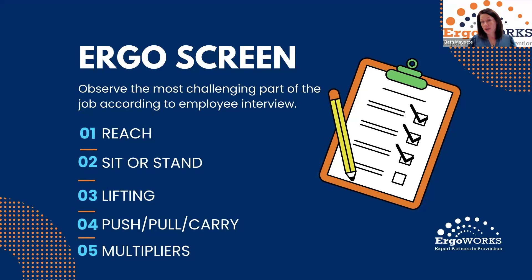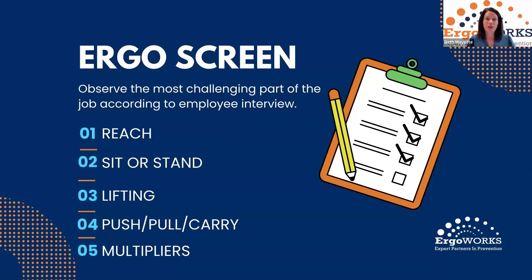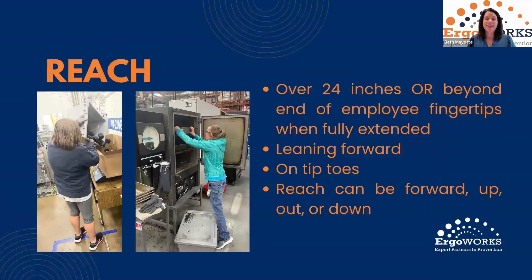Your ergonomic screen should focus on the most challenging part of the job according to that employee interview — what keeps coming up that people don't like, have suggestions for, or find awkward. The things you're going to look at are listed on your screen: reach, sitting or standing position, lifting, any push, pull, or carry material handling movement, and then what I'm calling multipliers — things that will make those factors more of an ergonomic risk.